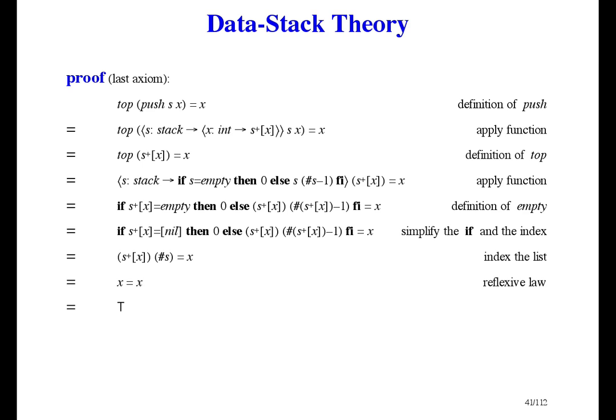That sounds wrong, because axioms don't need to be proven — what we're really proving is that the implementation satisfies the axioms. Here's a proof of one of the axioms. I won't go through it in detail, but I want to point out that we have to use the definitions of the implementation, and we also have to use list theory and function theory, because those are the theories we used in the implementation. Right here it says: if you catenate an item onto a list, it can't be empty — so that's false, and the if reduces to its else part. That means the zero in the then part is never used; it could have been anything, and the proof would still work. The other axioms are proven similarly.